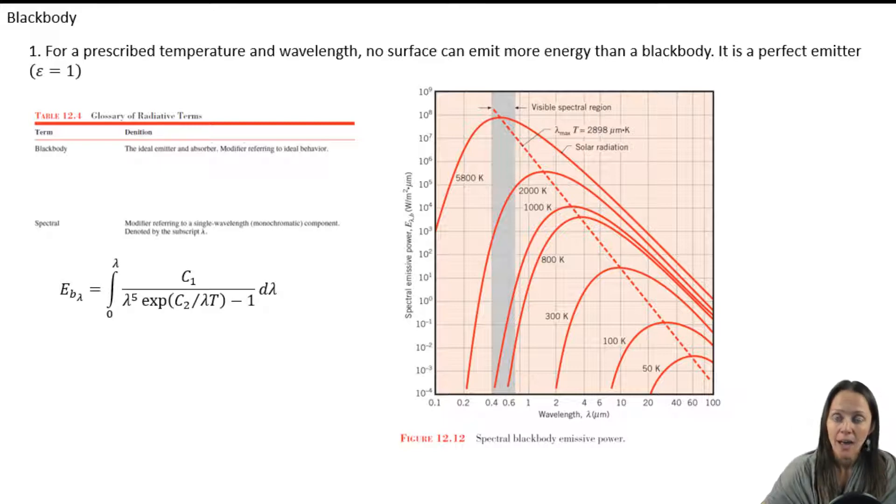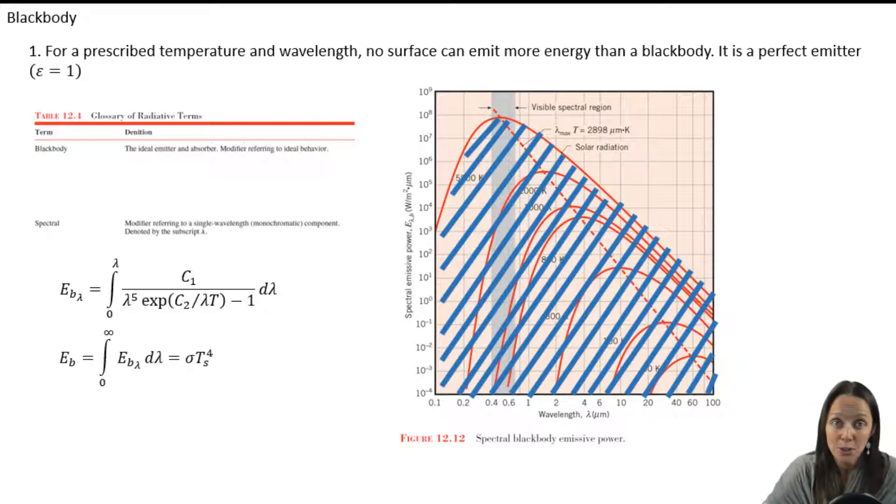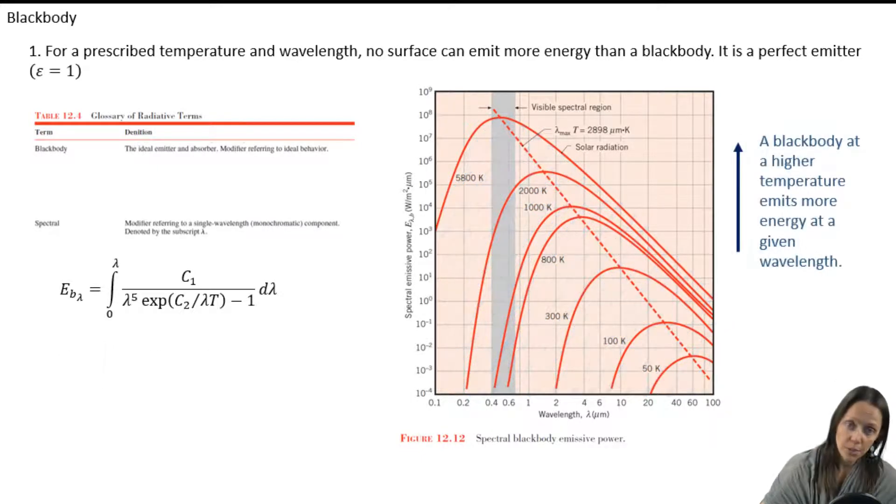Now, it looks really complicated. But if we integrate under one of those curves, let's just take a black body that's at the temperature of the sun, for example, which is about 5,800 Kelvin, we get something that looks really familiar to us. And if we go back to the figure, we notice a couple of things.